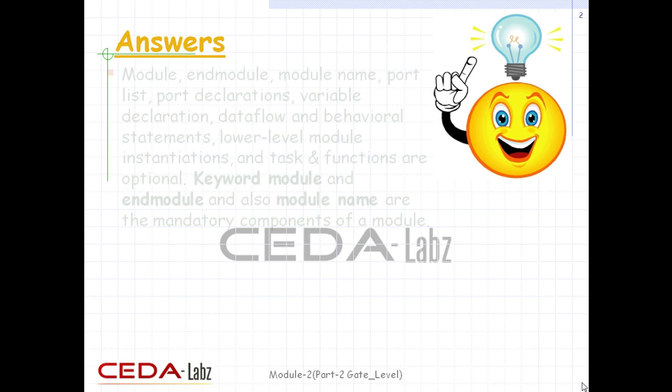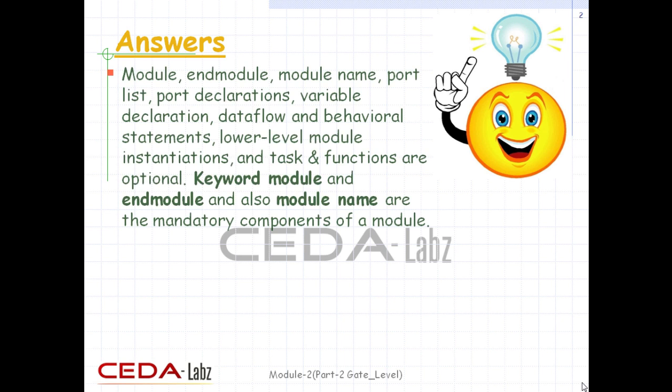The basic components of a module are: keyword module, end module, module name, port list, port declarations, variable declaration, data flow and behavioral statements, lower level module instantiations, and task and functions. From which, keyword module, end module, and module name are mandatory components.